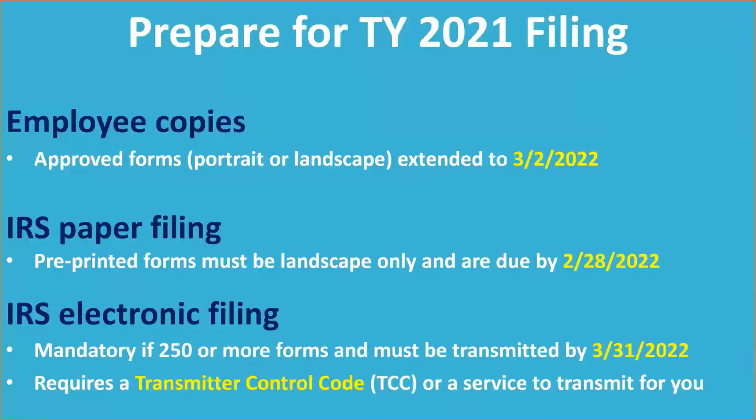Deadlines: the IRS has extended the 1095-C employee copy deadline 30 days this year to March 2nd instead of January 31st. If you're a paper filer with the IRS, the postmark deadline remains February 28th, and electronic filers still have until March 31st. Our software supplies you with the electronic test files you need to get your own Transmitter Control Code, or TCC, but we also offer services including a complete start-to-finish option we call full service. For those who can do all their own prep but just don't want to jump through all the IRS registration hoops, we have something we call proxy submission service and we can do that last-mile transmission for you.